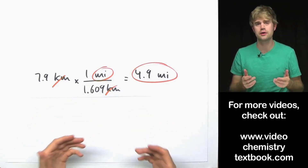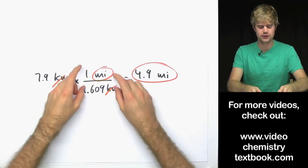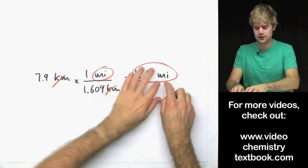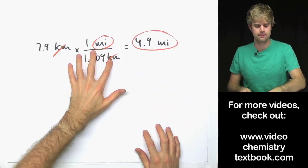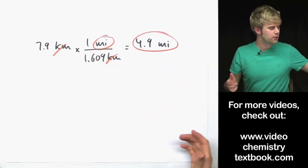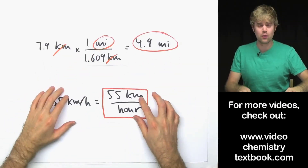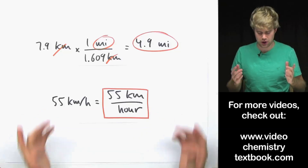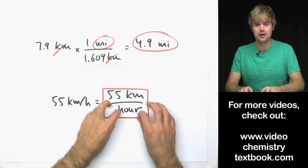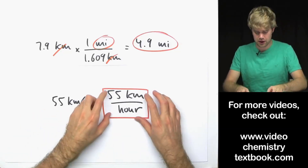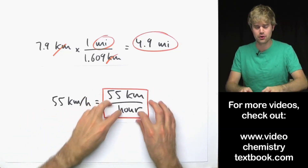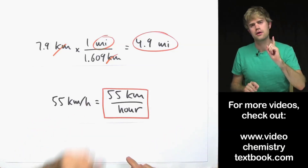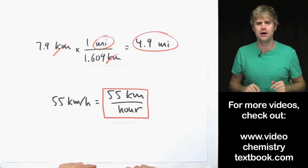In previous lessons we've seen how we can use conversion factors with a top and a bottom to convert units like kilometers to miles. But what do we do when the thing that we want to convert already has a top and a bottom, like kilometers per hour? How do we use conversion factors then? That's what we're going to talk about in this video.